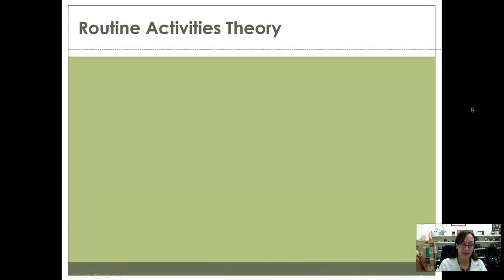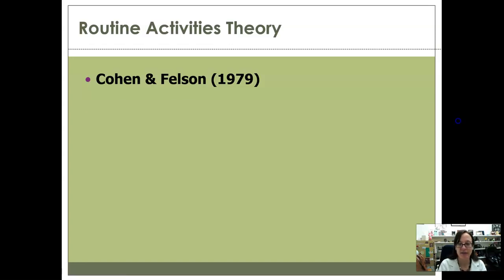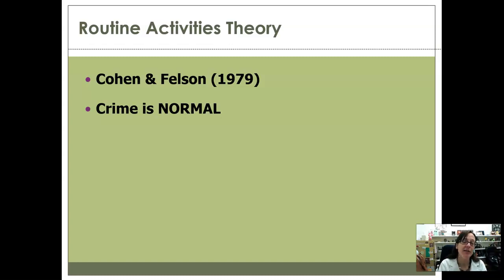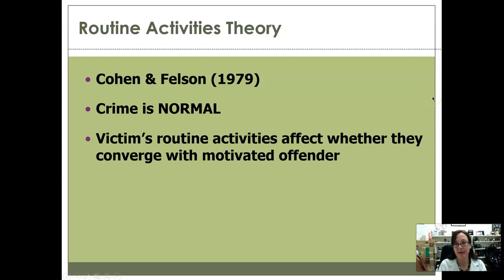Then we have routine activities theory, which is a personal favorite. Cohen and Felson developed this in 1979. One of the major underlying assumptions of routine activities theory is that crime is normal — meaning that given certain situations and certain characteristics of people within those situations, crime is a natural thing to be happening. Under certain conditions, crime is the natural, normal response or normal outcome. It's called routine activities theory because it comes from the idea that the daily activities somebody engages in is going to affect whether or not they are likely to converge with somebody who is motivated to offend against them.